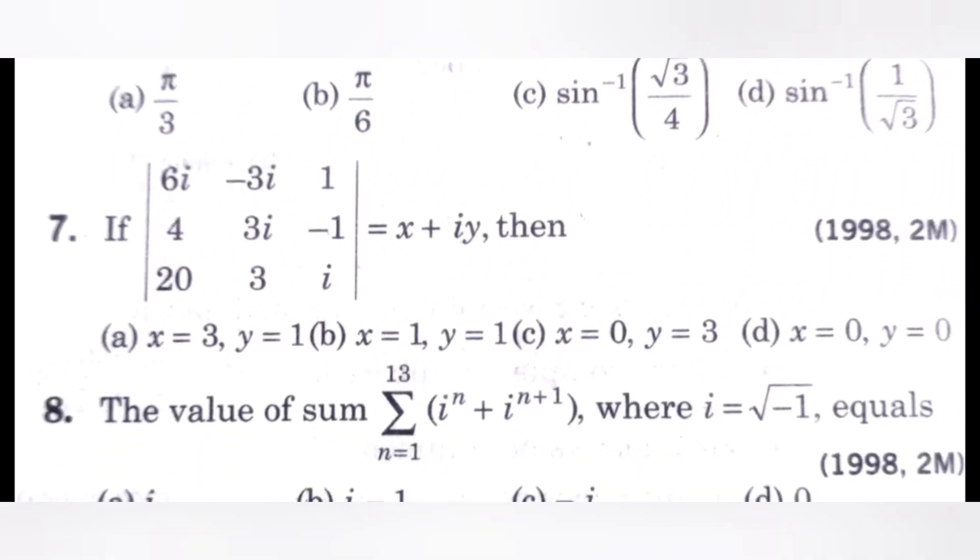Next question. If mod of the determinant 6i, minus 3i, 1; 4, 3i, minus 1; 20, 3, i equals X plus iY, then find the values of X and Y. Check the options.